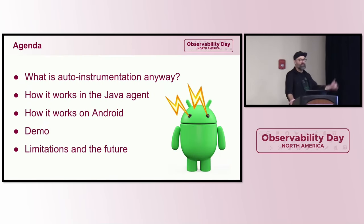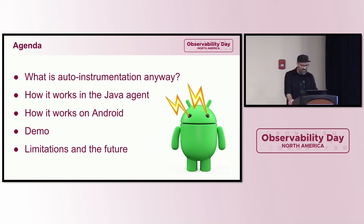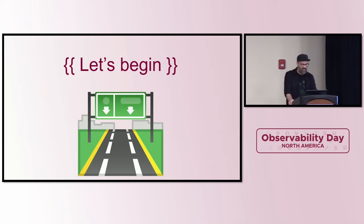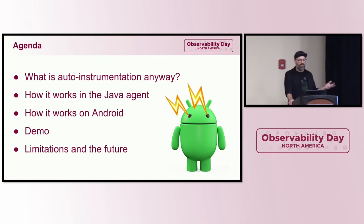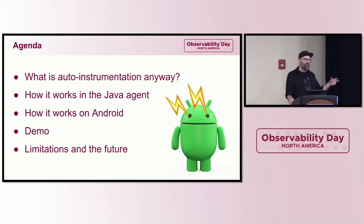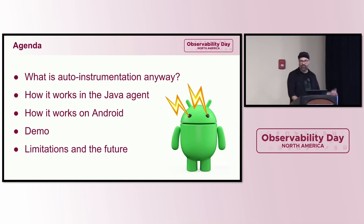Here's a quick agenda. This overlaps a bit with some talks earlier today. We're going to cover what auto instrumentation is so we can apply that to Android, the history of how it works in the Java agent, how we actually do it on Android, a short demo, some limitations of this approach, and where the future might take us.